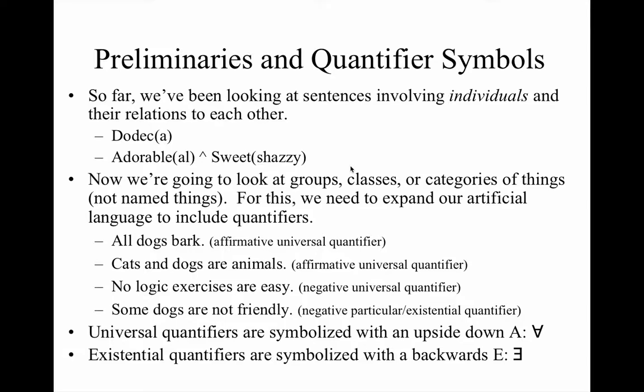Take a look at four examples that involve classes of things: 'All dogs bark,' 'Cats and dogs are animals,' 'No logic exercises are easy,' 'Some dogs are not friendly.' Each of these is an example, respectively, of an affirmative universal, an affirmative universal, a negative universal, and a particular or existential negative.